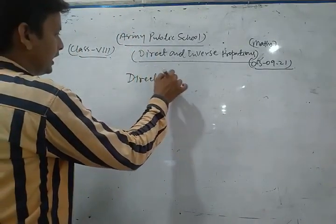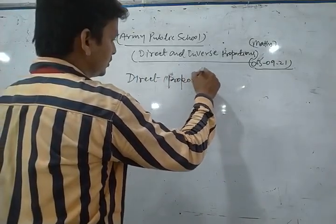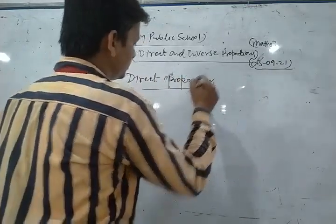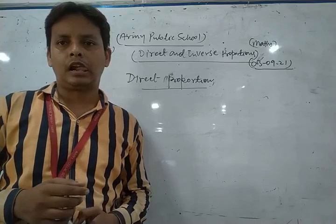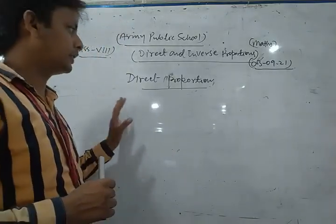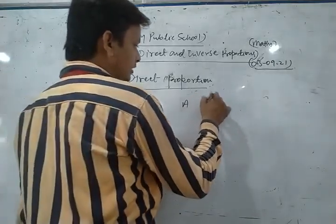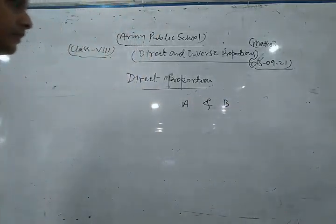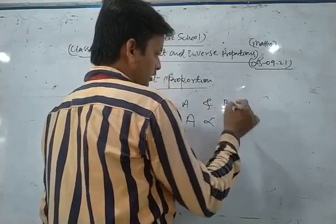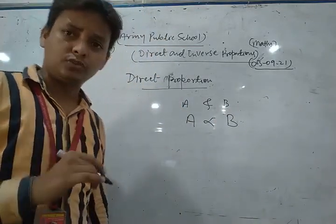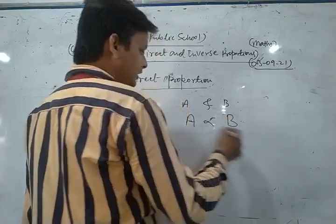First of all, let us clear the concept of direct proportion. What is the concept of direct proportion? Suppose there are two quantities, a and b. If we write a is proportional to b, then this is said to be direct proportion.